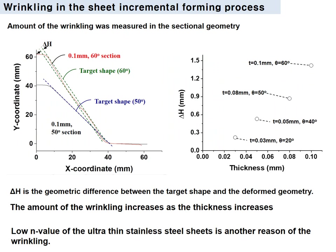The next slide shows the amount of wrinkling in the incremental forming process. The target geometry was a conical shape. Delta H was the geometric difference in the slope. When the angle was 50 degrees, the geometry was very similar to the target geometry. However, when the angle was 60 degrees, it showed a large difference. The graph presents the relationship between delta H and thickness when wrinkling occurs. The amount of wrinkling increases as the thickness increases and the forming angle increases. The low work-hardening exponent (n-value) of ultra-thin stainless steel sheet is another reason for the wrinkling.